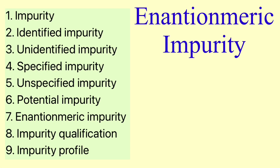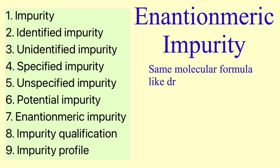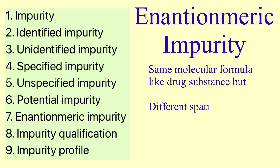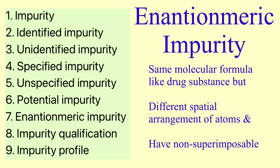Now comes enantiomeric impurity. An enantiomeric impurity is an impurity which has the same molecular formula as the drug substance, but there is a difference in the spatial arrangement of atoms within the molecule, and the enantiomeric impurity has a non-superimposable mirror image.